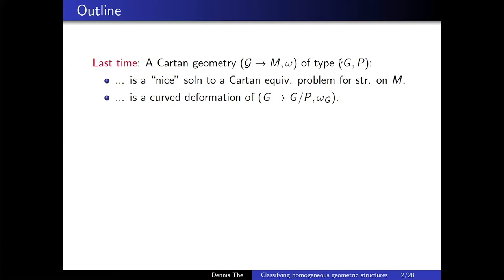Another perspective is that you get a curved deformation of a so-called flat model. Having a Cartan geometry, you have a way of assigning a notion of curvature, and when curvature is zero you're locally isomorphic to this flat model, this Klein geometry. Here omega_G is the Maurer-Cartan form on G. We also pulled back the curtain and saw that we're talking about co-framings, and when we take the exterior derivative we can write that out in terms of the co-framing itself — structure equations for that co-framing. Today we'll be going more into the guts of it, talking about these structure equations and how we can use them for classification.